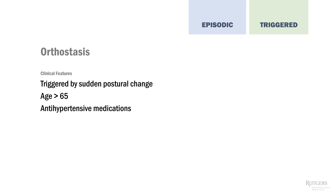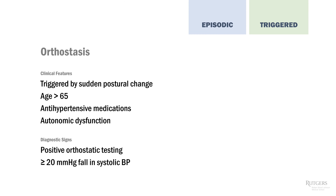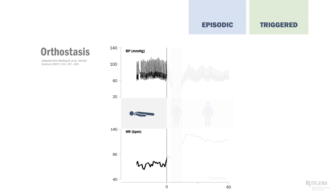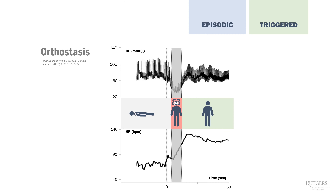Orthostasis is similar to BPPV in that it's triggered by sudden postural change and occurs more often in the elderly. But in BPPV the positional change is rotation of the head; in orthostasis it's going from lying or sitting to standing — it doesn't happen when lying down or rolling over. Autonomic dysfunction is a key feature: think patients with diabetic neuropathy and neurodegenerative conditions like Parkinson's disease, multisystem atrophy, and dementia with Lewy bodies. Orthostatic testing is positive if blood pressure falls by more than 20 mmHg systolic or 10 mmHg diastolic. On standing, blood pressure drops with a compensatory heart rate increase; within about 20 seconds, compensatory mechanisms restore pressure and symptoms resolve.